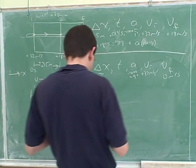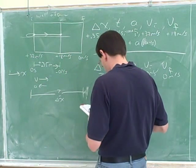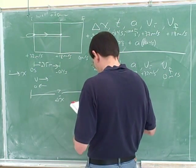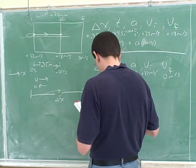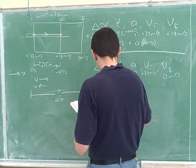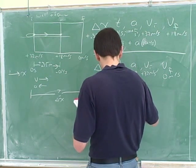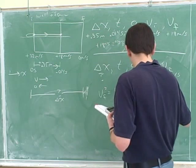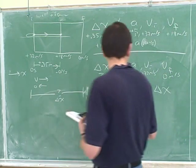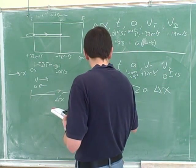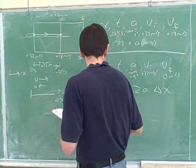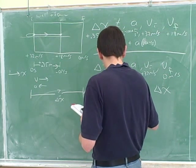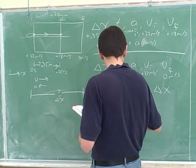We want to pick the equation that's missing time. The equation that's missing time is v final squared equals v initial squared plus 2a delta x. v final is 0, and v initial is our positive 32.